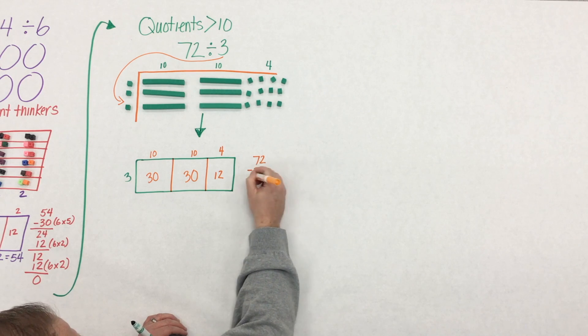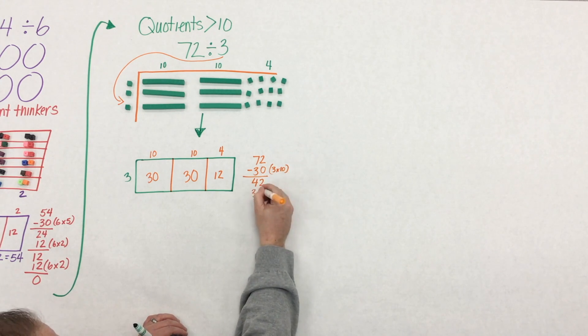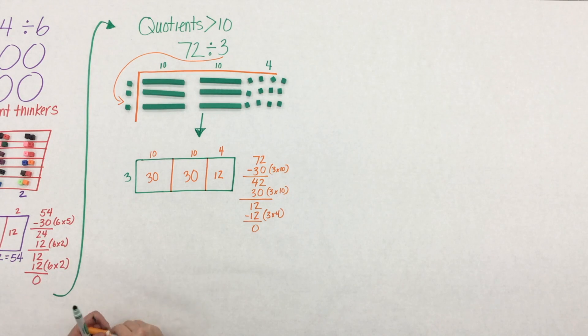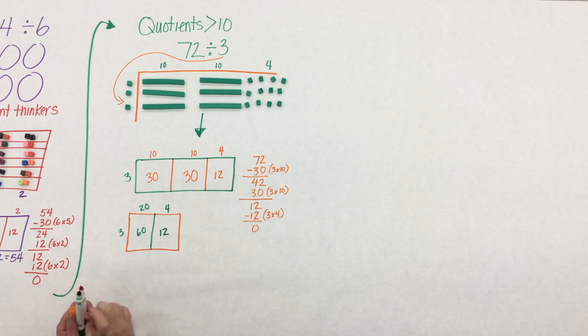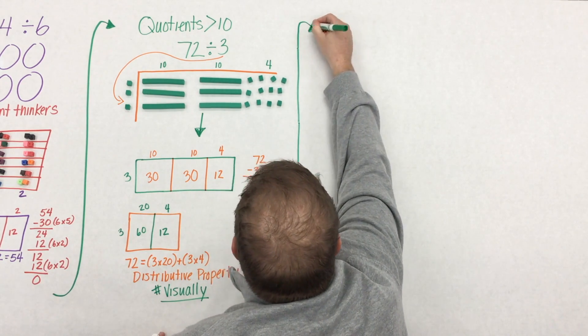And then we want to make that connection from the concrete with the base 10 blocks to the representation. And how do we record our representation in a written expression? And some students might begin to collectively group their 10s, and that's where the 20 came from. The best part about this is that students are making a connection back to multiplication by using the distributive property. And they're seeing it visually.